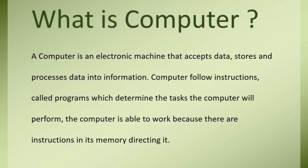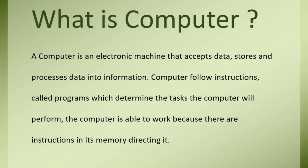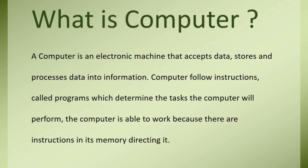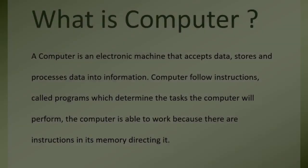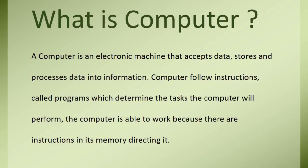What is a computer? A computer is an electronic machine that accepts data, stores and processes data into information. A computer is an electronic data processing and storage machine. The computer follows instructions called programs which determine the tasks the computer will perform. The computer is able to work because there are instructions in its memory directing it.